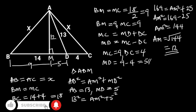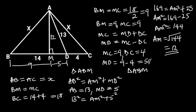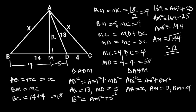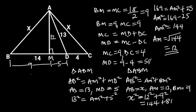Going further, let's focus on triangle ABM. Triangle ABM is a right triangle. From Pythagoras' theorem, AB squared is equal to AM squared plus BM squared. AB is equal to X, AM is equal to 12, and BM is equal to 9. Substituting these values gives us X squared is equal to 12 squared plus 9 squared. 12 squared is equal to 144, and 9 squared is equal to 81. 144 plus 81 is equal to 225. So X squared is equal to 225.